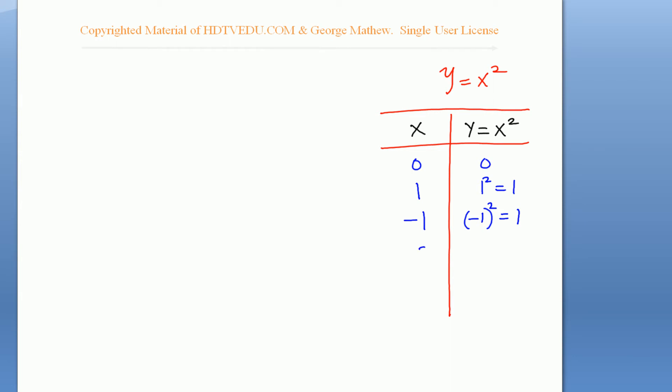As you can see, when we replace one with negative one, the y value remains the same at one. Let's try two: two to the power of two is four. When you replace two with negative two, it is negative two to the power of two, and that is also four.